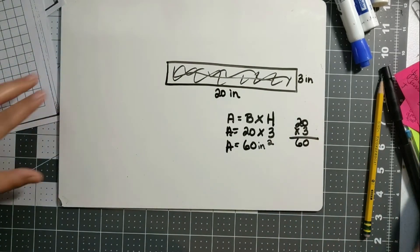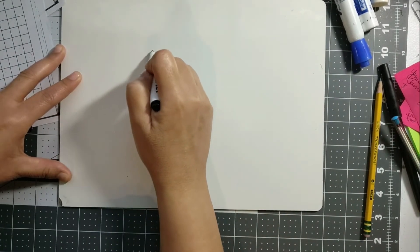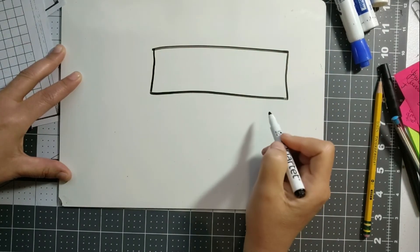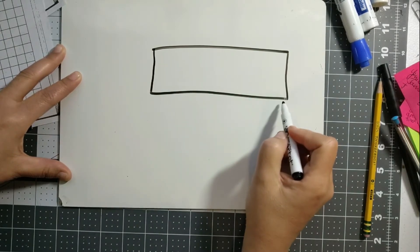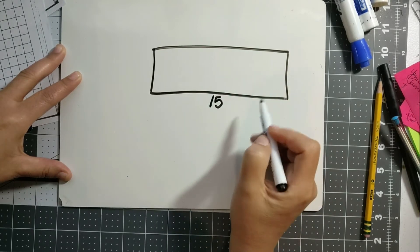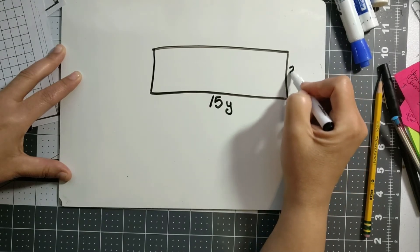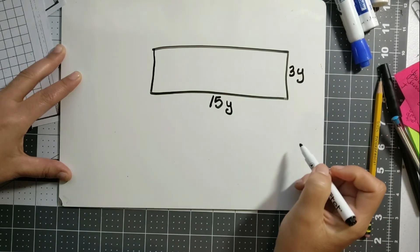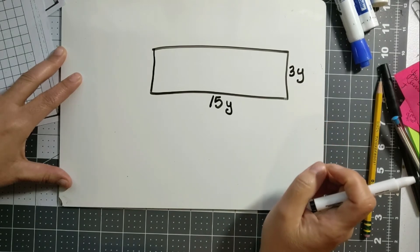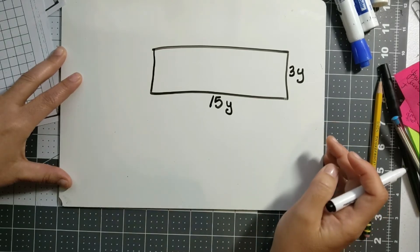So now I'm going to do one and then I want you to practice. Here is a rectangle. The base is 15 yards and the height is 3 yards. So I want you to go ahead and pause the video, work it out, and then unpause the video and come back and see if you got the answer correct.